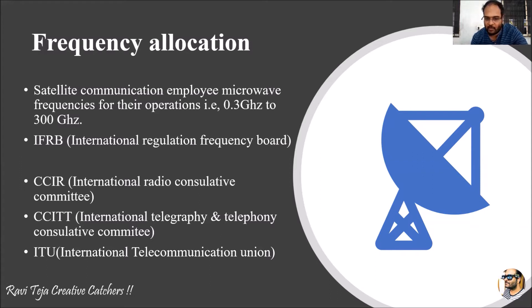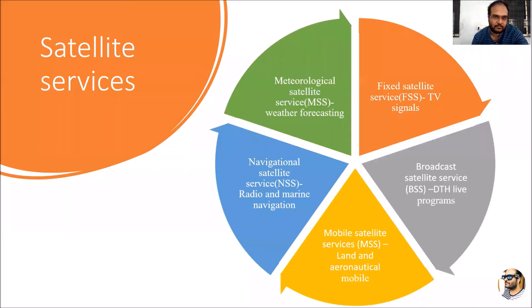We have several boards, companies, or unions. The first is IFRB — International Frequency Regulation Board. The second is CCIR — the International Radio Consultative Committee. The third is CCITT — the International Telegraphy and Telephony Consultative Committee. And the last one is ITU — the International Telecommunication Union.